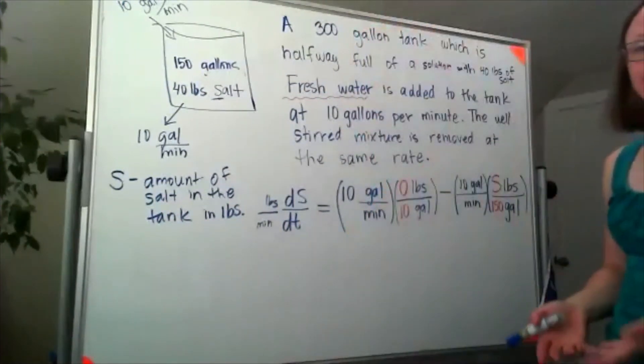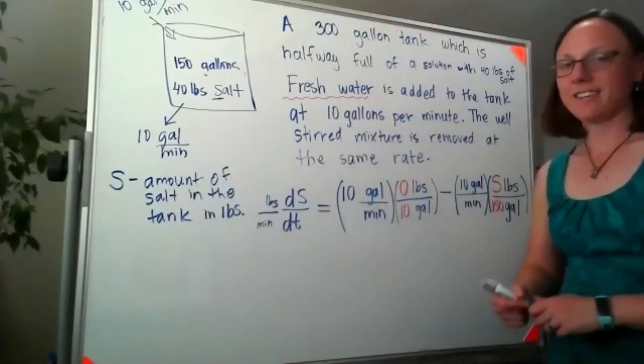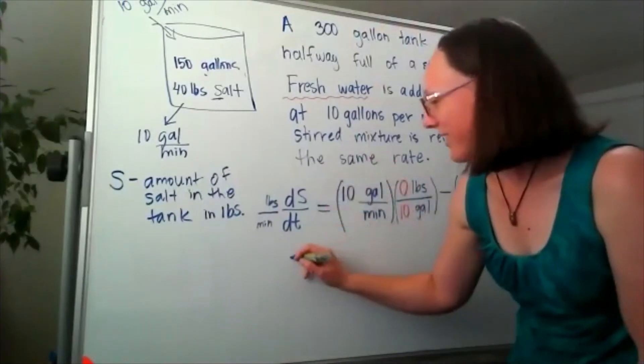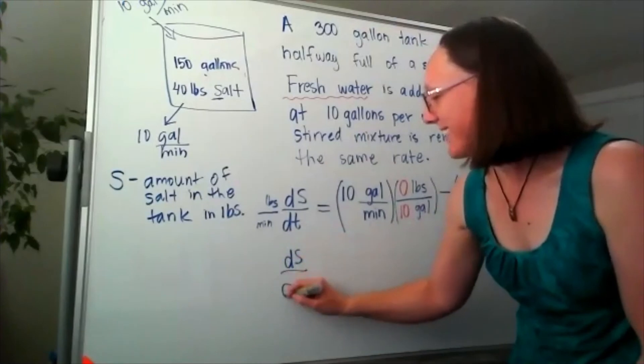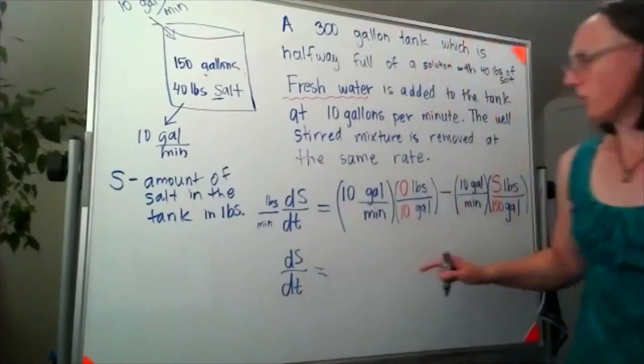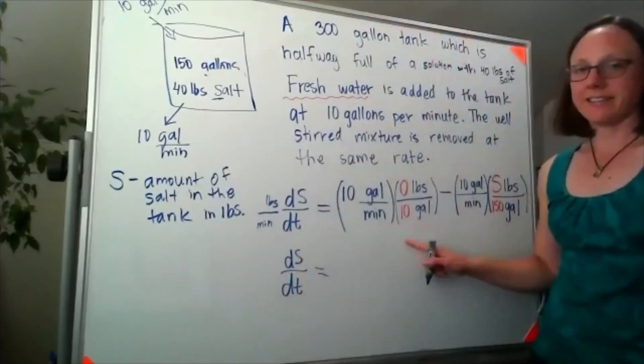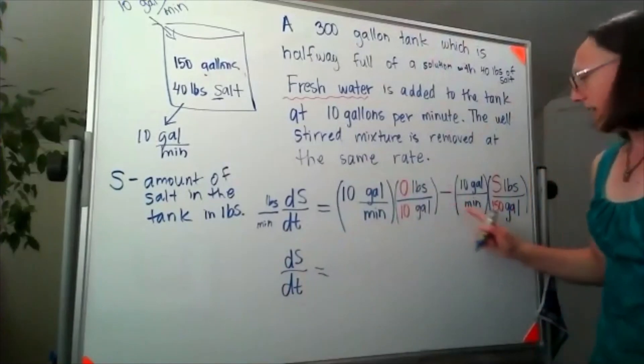Usually it's easier to solve the differential equation if we ditch all the units. So I would actually think about this as dS/dt equals—well, 0 times 10 is 0, so that whole piece is gone. And then here, the 10 and the 150, I could simplify those to say we just have negative S over 15.